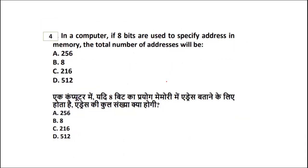Question four, ICT: in a computer, if eight bits are used to specify the address of a memory, the total number of addresses is — is it 256, 8, 216, or 512? Eight bits used to specify an address results in a total of 256 memory addresses.